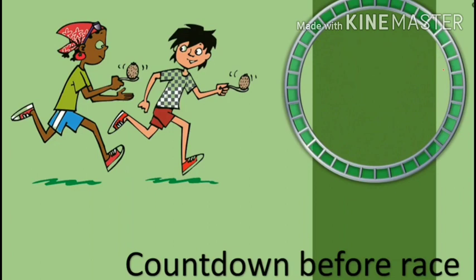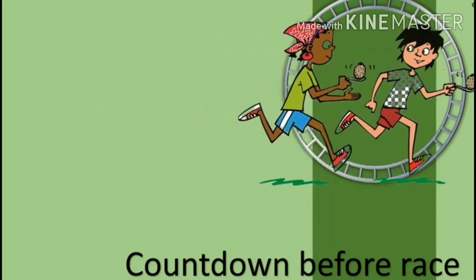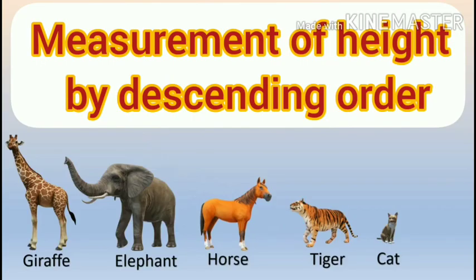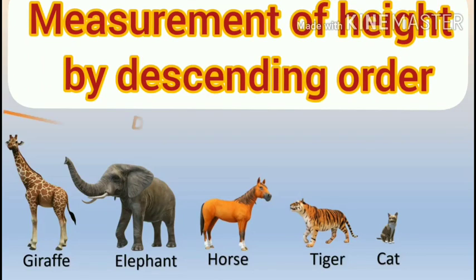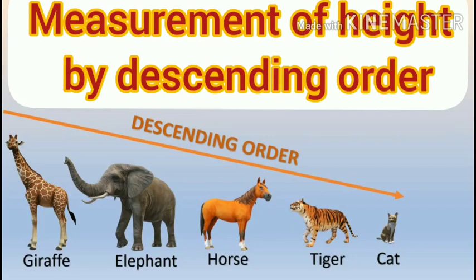Next, where else do we see descending order? Yes — countdown before a race. Next, measurement of height in descending order. As you can see in the picture: the tallest is the giraffe, then elephant, then horse, then tiger, and the smallest is the cat.